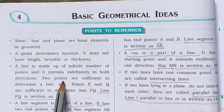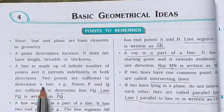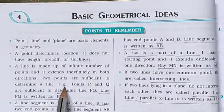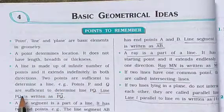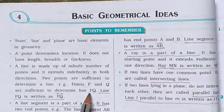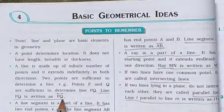Two points are sufficient to determine a line. For example, points P and Q are sufficient to determine line PQ. Line PQ is written with a double-headed arrow over PQ.